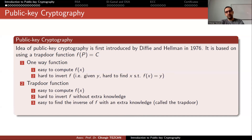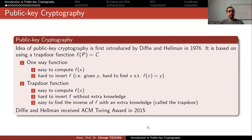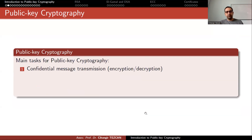Diffie and Hellman introduced this idea and said that this way we can perform encryption and decryption, but they didn't provide any encryption algorithm. Instead, they provided a key exchange algorithm, commonly referred to as Diffie-Hellman key exchange, and most of our security relies on this. In 2015 — which is actually late — they received an ACM Turing Award. It is very fundamental.